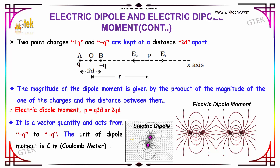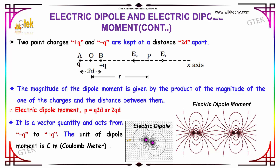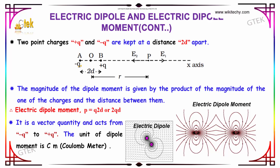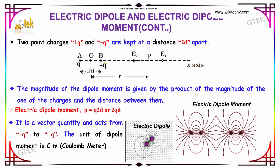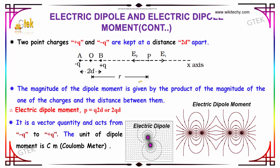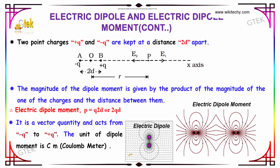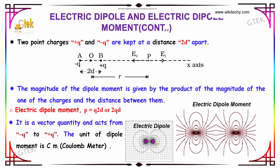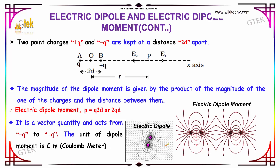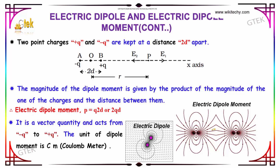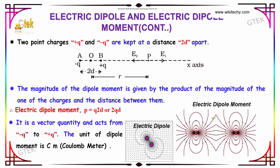Therefore, we can define the electric dipole moment as P equal to Q into 2D, or 2QD. This is a vector quantity acting from minus Q to plus Q. The unit of dipole moment is coulomb-meter.